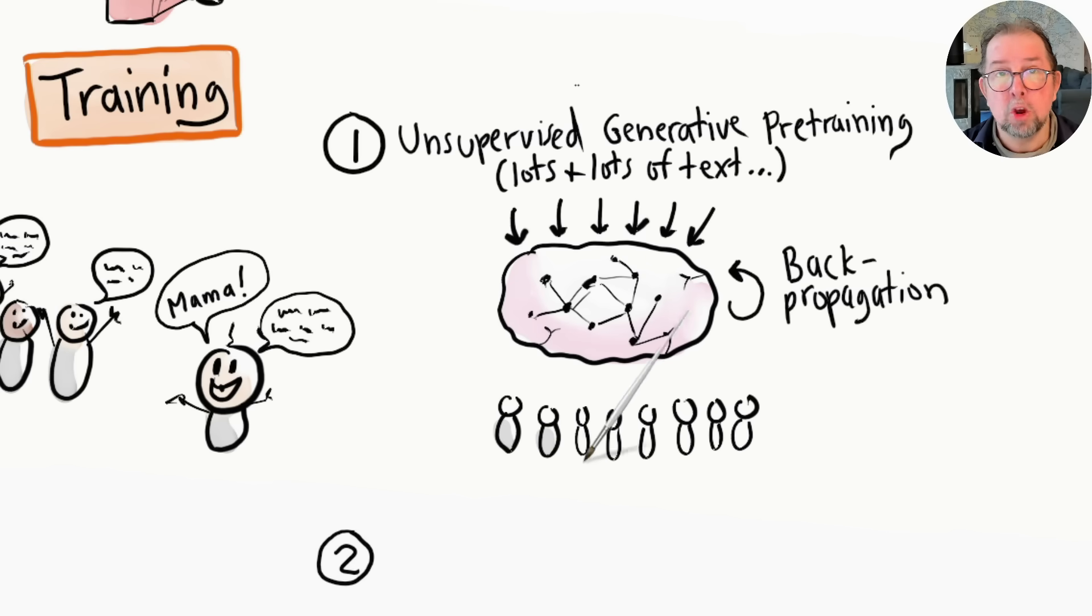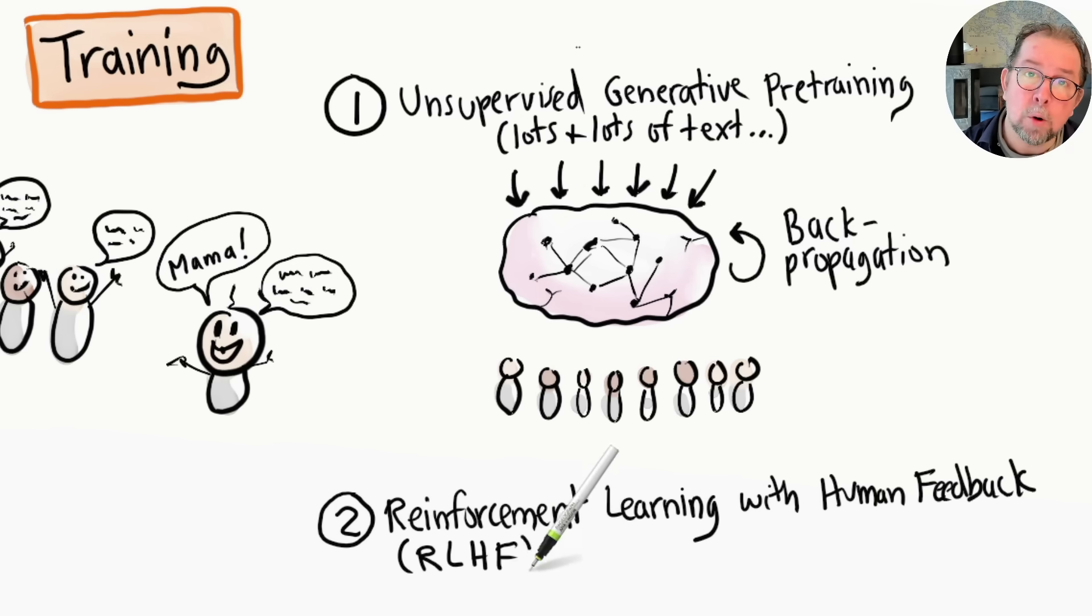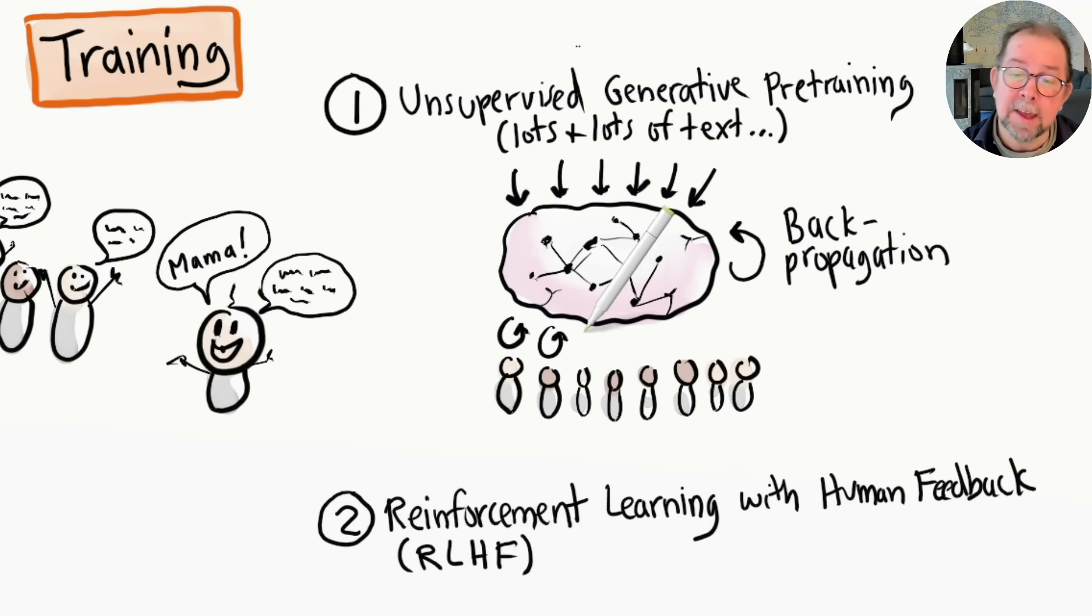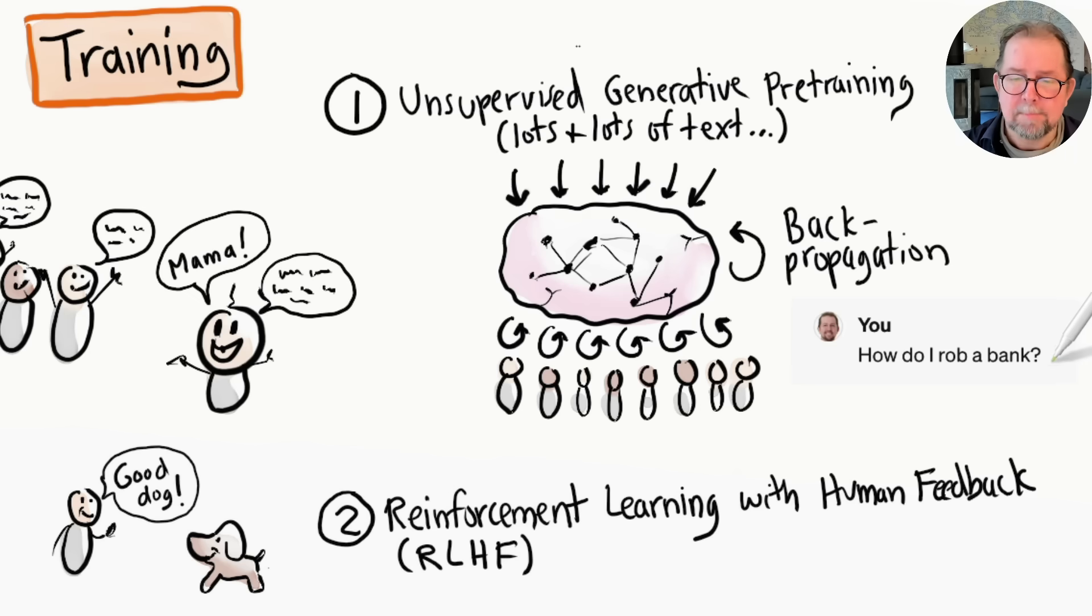However, to become truly useful, a model also needs to undergo human training. This is called reinforcement learning with human feedback, and it involves thousands of hours of humans painstakingly testing and evaluating output from the model and giving feedback, kind of like training a dog with a clicker to reinforce good behavior. That's why a model like GPT won't tell you how to rob a bank. It knows very well how to rob a bank, but through human training it has learned that it shouldn't help people commit crimes.